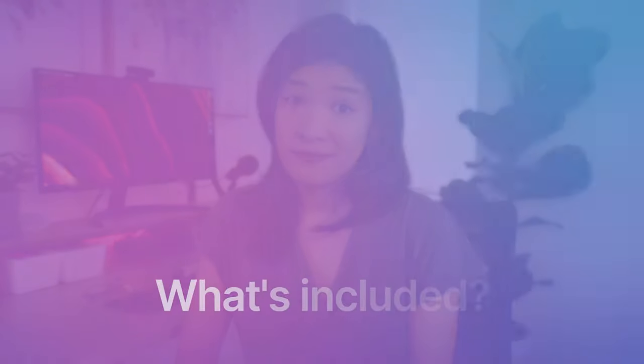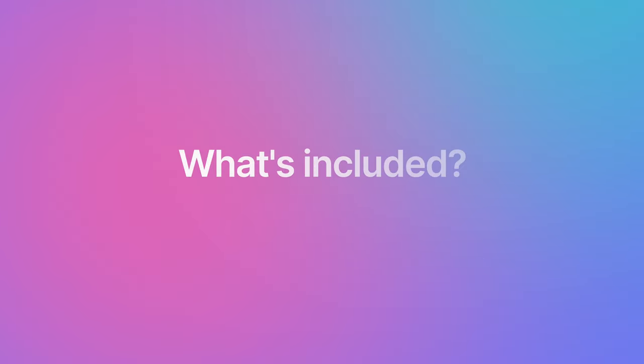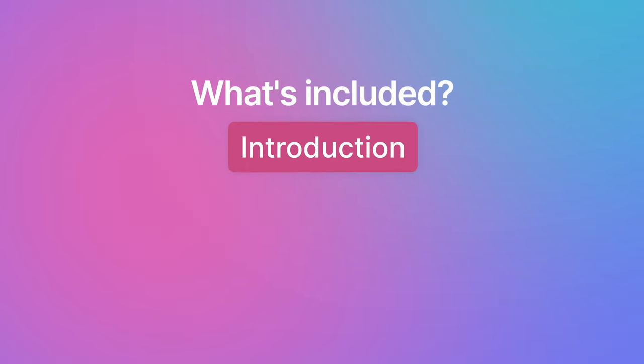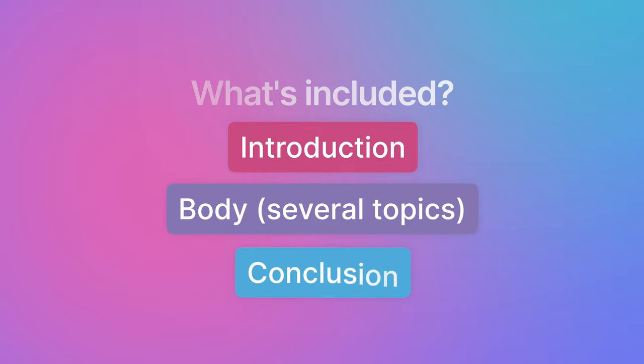What should you include in your SOP? An SOP is usually made up of an introduction paragraph followed by several topic paragraphs and a conclusion. There is no one way to write an explanation letter because everyone's story and circumstances are unique. Just remember that the letter should be made to fit your situation and should explain in a clear way why you need to study in Canada to reach your long-term goals.